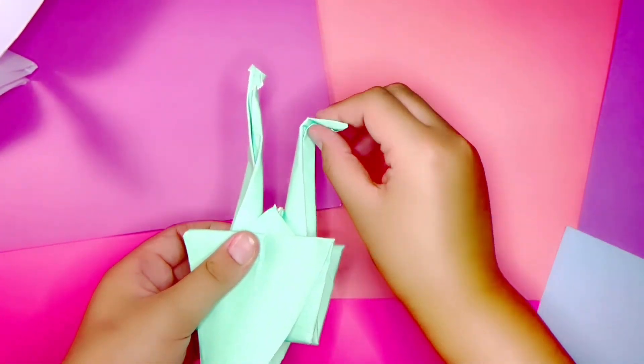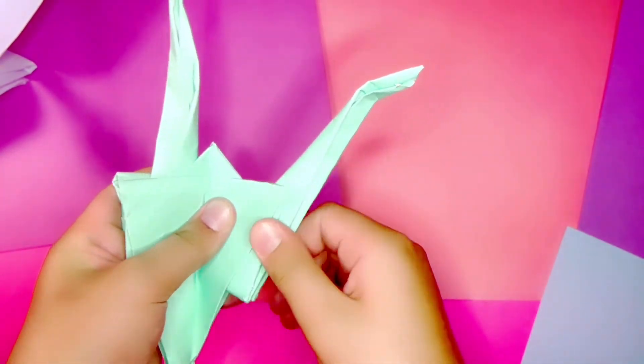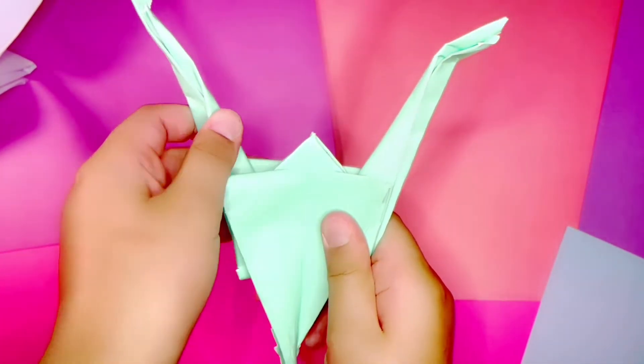Now, you pull out the long pieces of paper, the head and the tail. Pull them both out so that they line up with the angle of the body fold.